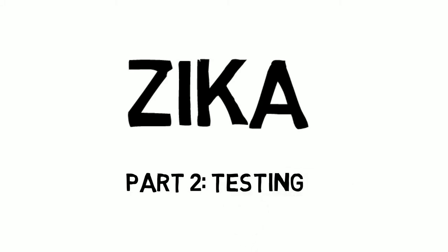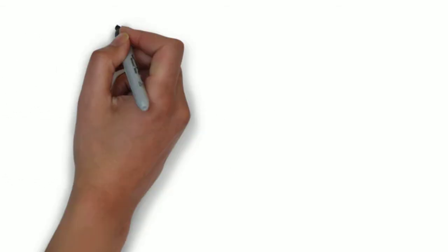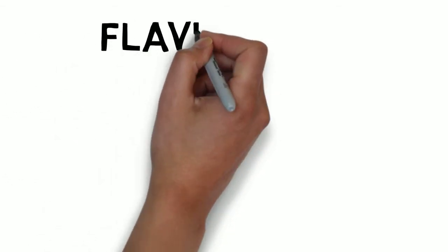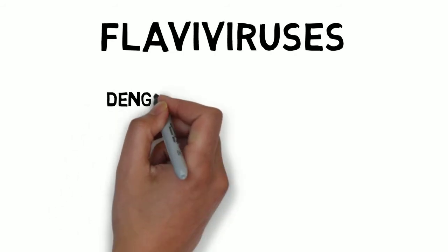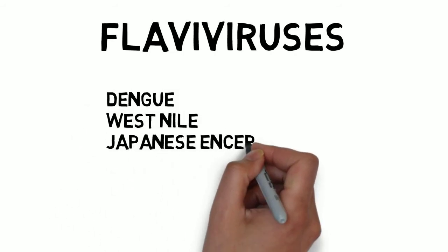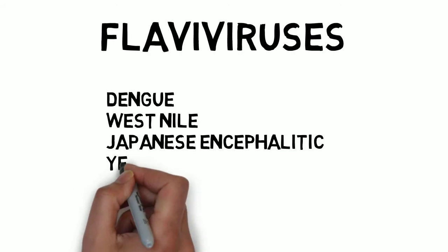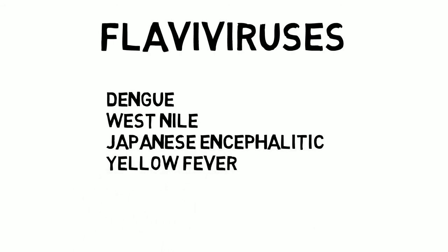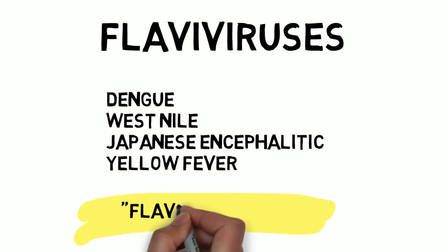We're going to talk about things about Zika that have a bearing on the interpretation of lab results. Zika is a flavivirus closely related to dengue, West Nile, Japanese encephalitis, and yellow fever viruses. This similarity needs to be kept in mind as we go along.